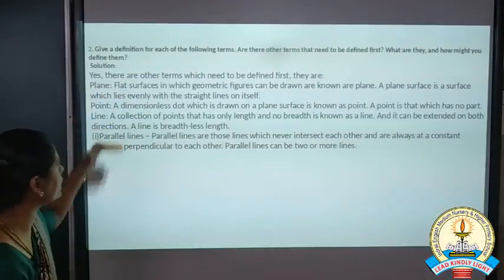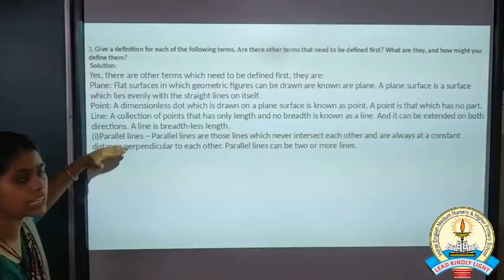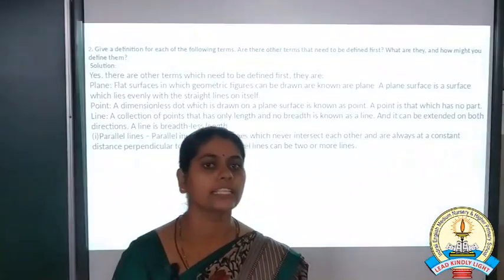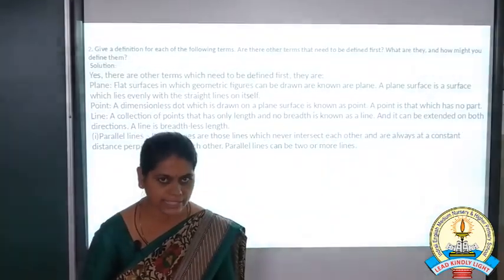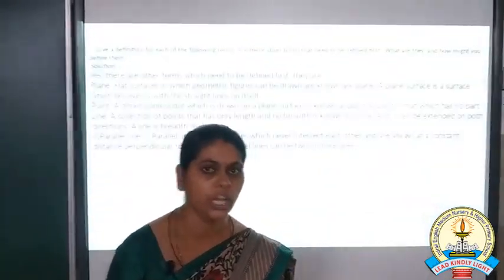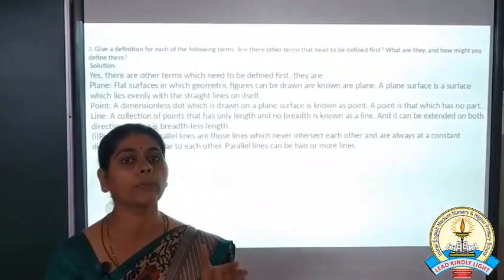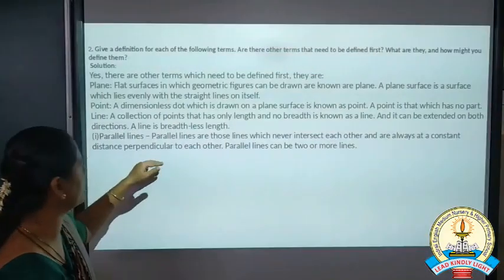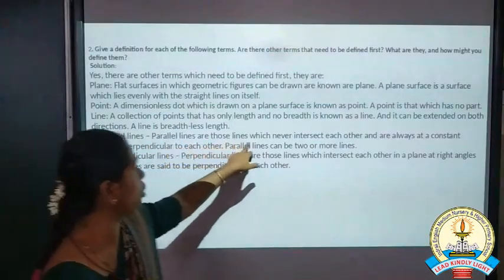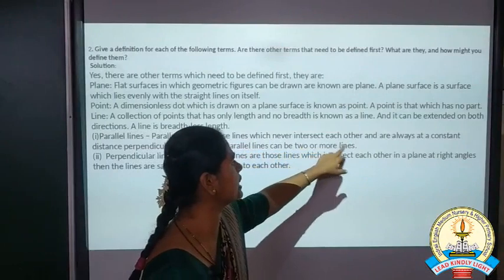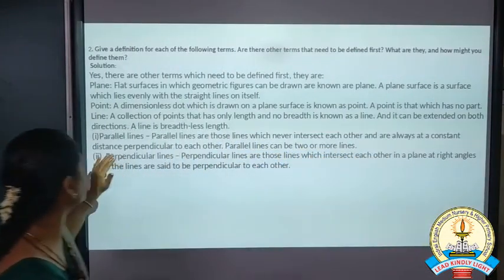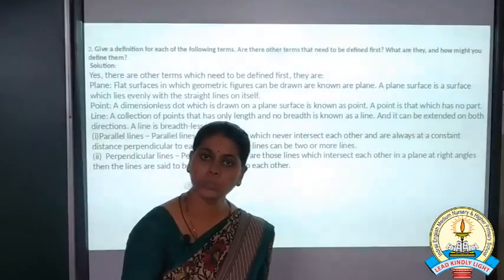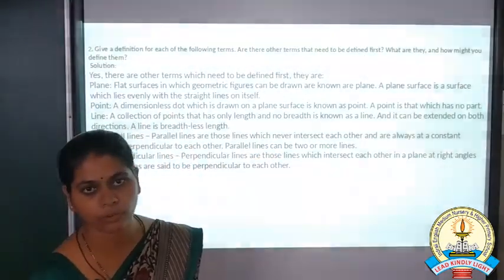Using these three things we can define the following. What are parallel lines? This you learnt in your lower classes. Parallel lines are two lines which will not meet each other if you extend them to any length. They are called parallel lines — those lines which never intersect each other and are always at a constant distance. Parallel lines can be two or more.